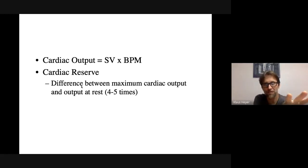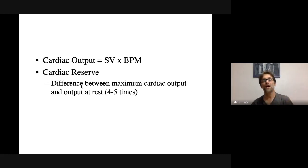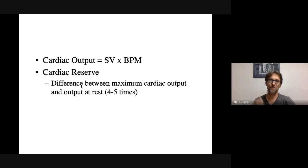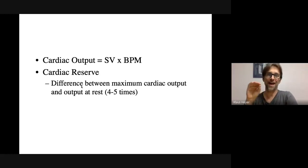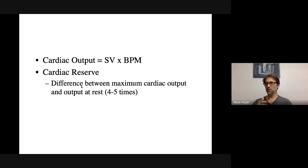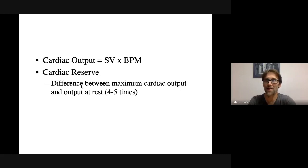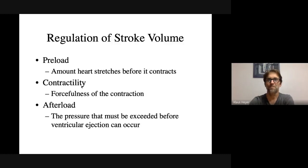Just remember: 1,000 milliliters equals one liter, so 3,600 milliliters is 3.6 liters — that conversion should be quick. Cardiac reserve is how much more blood your heart can put out when needed — say when you're running versus sleeping — your heart can put out four to five times more blood if it has to.